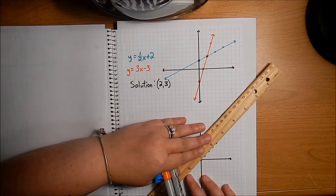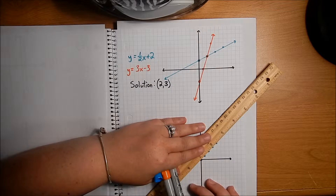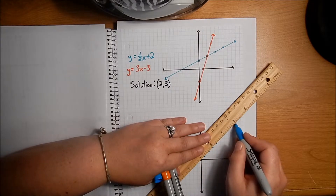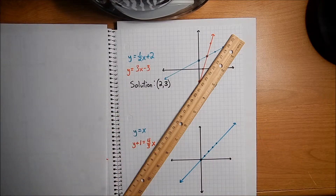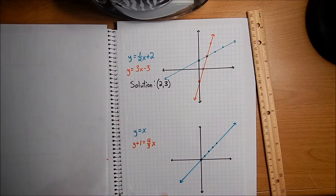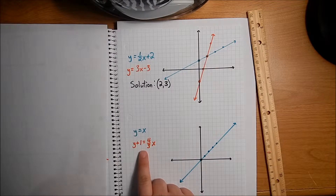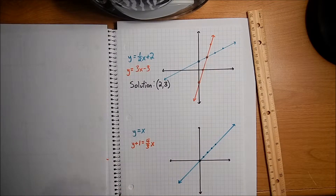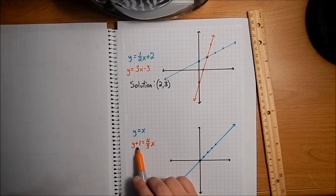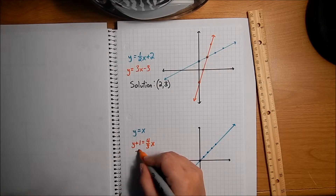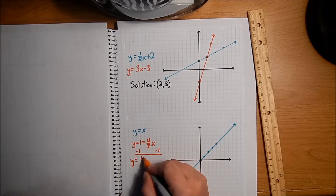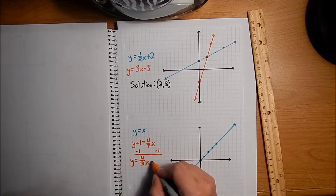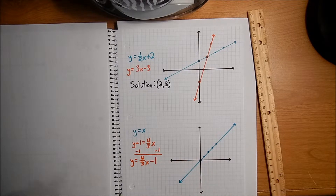Remember, you really do want to use a ruler because when you're solving by graphing, the more precise you can be, the better. Now this other equation is not quite in slope-intercept form yet, so I would just have to rewrite it. The only thing I'll need to do is subtract 1 to the other side, so now I have y equals 4/3 x minus 1. Now that is in graphable form.